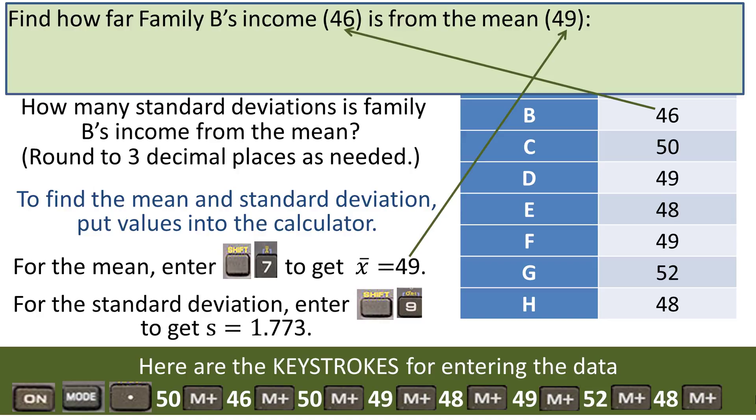Family B's income is forty six. The mean is forty nine. That's a difference of three. Family B's income is three away from the mean.